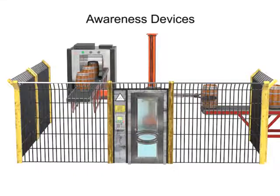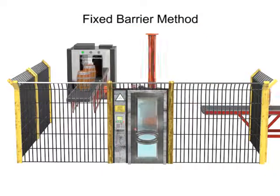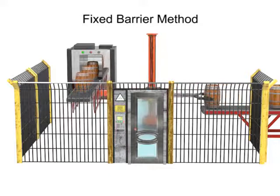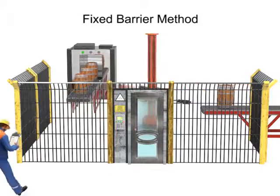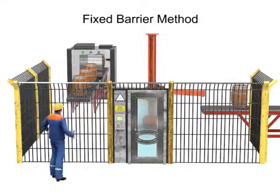They do not prevent access and usually consist of small fences or roped-off areas. Guarding methods are used to prevent unauthorized access to the work envelope. The simplest is known as the fixed barrier method, such as a fence or wall. The physical barrier is put around the work area and is configured in such a way that prevents access through, over, or around without a special key or access code.